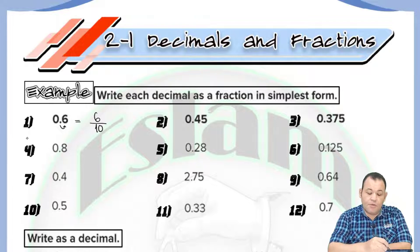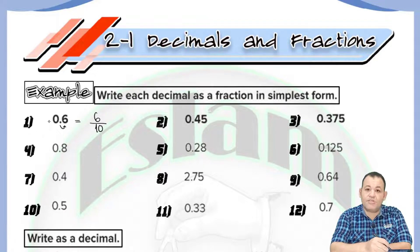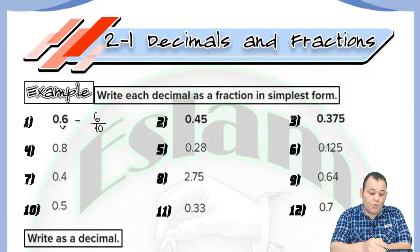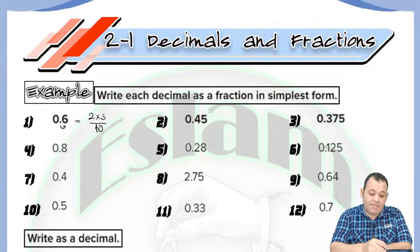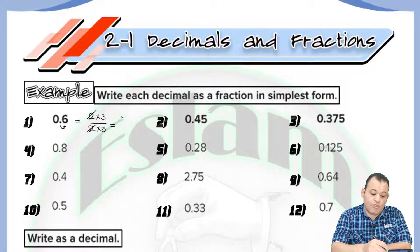Because the whole number here is zero, there is no whole number. Now we need to simplify. We know that six equals two multiplied by three, and ten equals two multiplied by five. So we can cancel out the twos. It will be equal to three over five. And that's how we write 0.6 as a fraction.